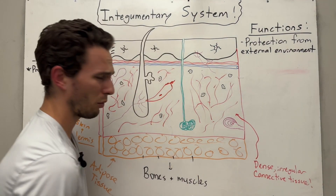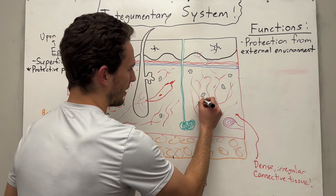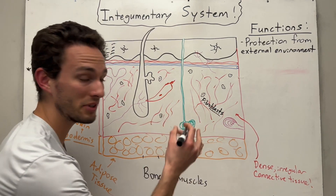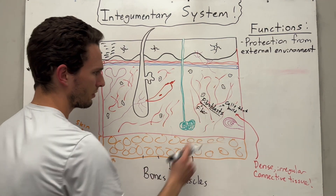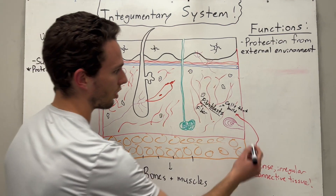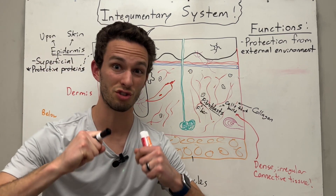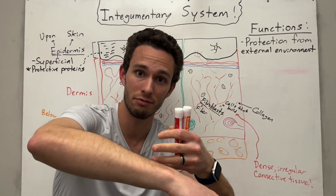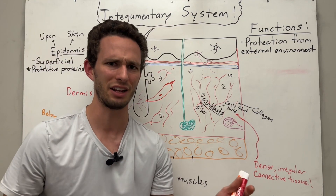A connective tissue has cells, and the main cells inside your dermis are going to be these little guys called fibroblasts. As the word implies, these are blasts — cells that build something — and fibro means fiber. So we have cells in here that build fibers. These little red strings are called collagen, and these are protein fibers that give skin its strong strength, elasticity, and its ability to snap back from where it came from.